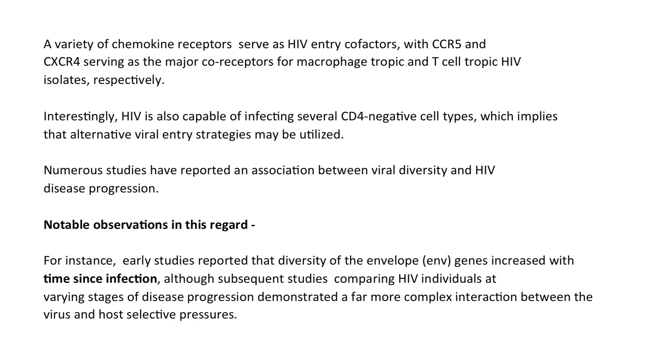Several of these phenotypic differences have been attributed to the outer enveloped glycoprotein, namely the trimeric GP120. It is well established that HIV gains entry into target cells by forming a complex consisting of GP120, the CD4 receptor, and members of the chemokine coreceptor family. A variety of chemokine receptors serve as HIV entry cofactors, with CCR5 and CXCR4 serving as the major coreceptors for macrophage-tropic and T-cell-tropic HIV isolates respectively.